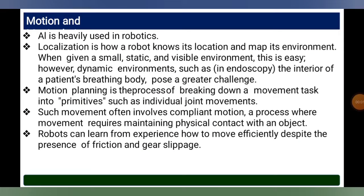Motion and planning AI is heavily used in robotics. Localization is how a robot knows its location and maps its environment. When given a small, static, and visible environment this is easy; however, dynamic environments such as endoscopy — the interior of a patient's breathing body — pose a greater challenge.